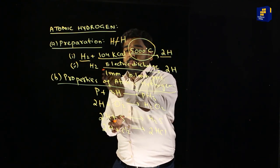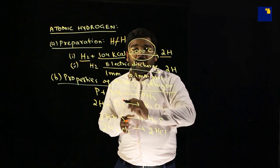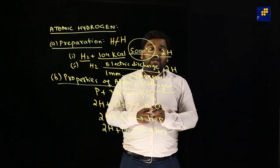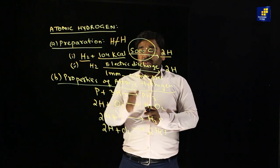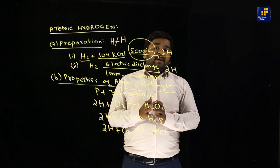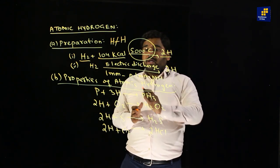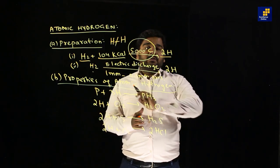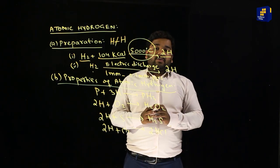We can take hydrogen through electronic discharge at a pressure of 1 mm to 0.1 mm, and it will convert to atomic hydrogen.